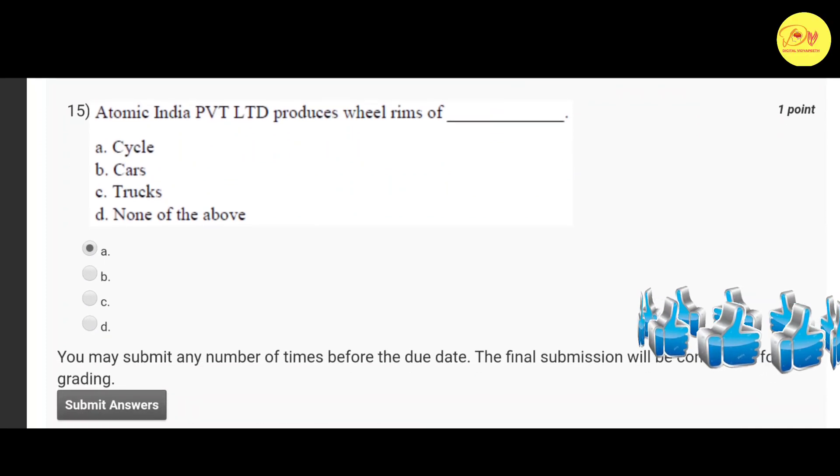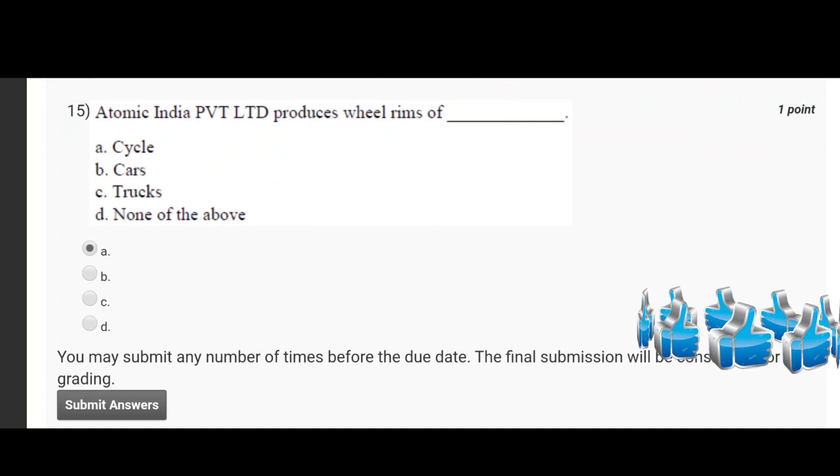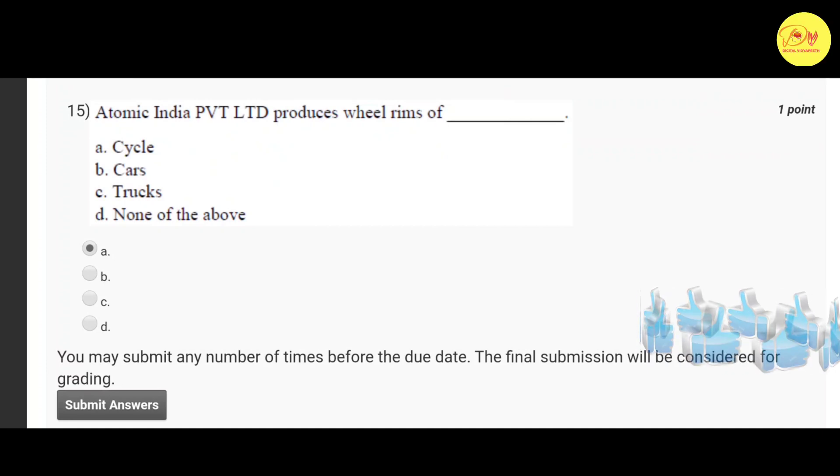Our last question is Atomic India private limited produce wheel rims of. Correct option is A, cycle.